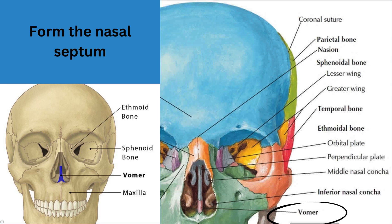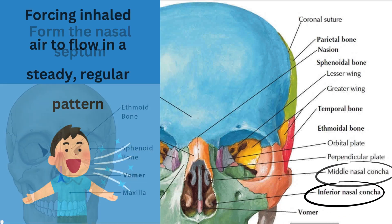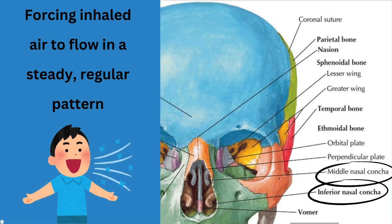Next is the nasal concha. We have two: the middle nasal concha and the inferior nasal concha. Both have the same function, which is forcing the inhaled air to flow in a steady, regular pattern in order to reach your lungs safely.